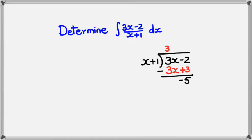So with this information I can actually rewrite the question because I know that 3x minus 2 divided by x plus 1 could be written as, the quotient is 3 plus the remainder is minus 5 and the divisor is x plus 1.